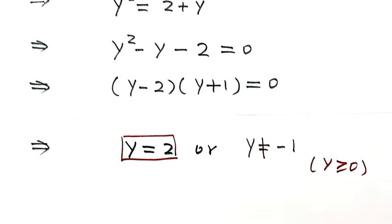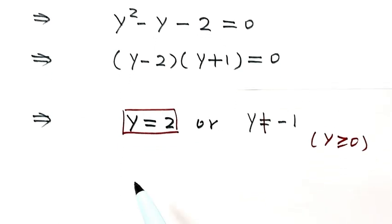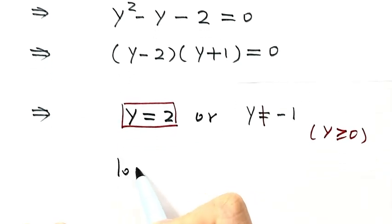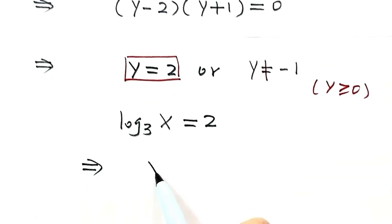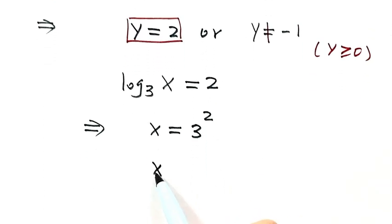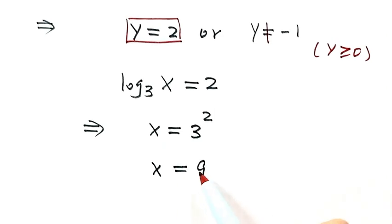Now let's use back substitution. Because y equals log base 3 of x, we have log base 3 of x equals 2. Solving for x, x equals 3 raised to the power of 2, which is 3 squared. Therefore x equals 9. 9 is the integer solution of this equation.